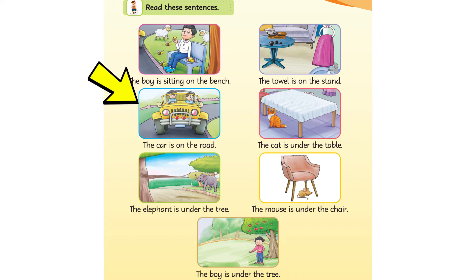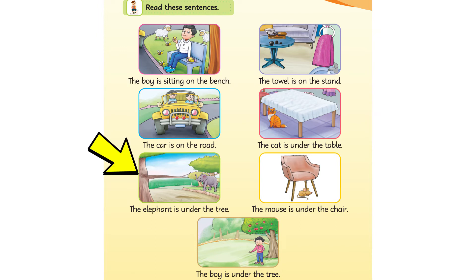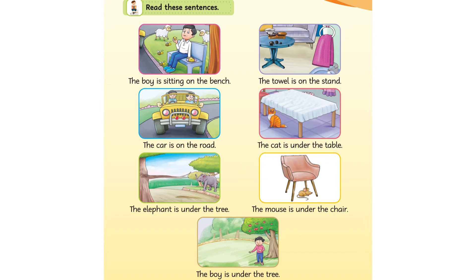The car is on the road. The cat is under the table. The elephant is under the tree. The mouse is under the chair. The boy is under the tree.